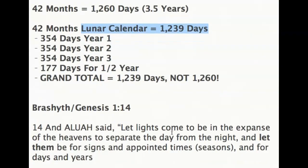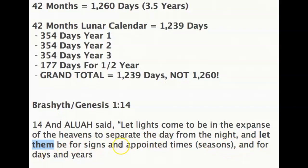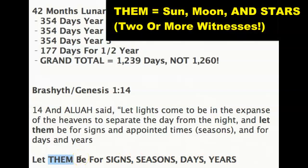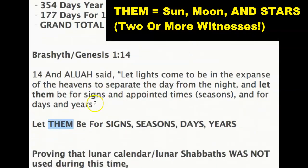We also have this witness in Genesis 1:14, where Aluah said, 'Let lights come to be in the expanse of the heavens, to separate the day from the night, and let them' — notice plural, not just the moon itself — 'be for signs, and appointed times, and for days, and for years.' The 'them' is talking about the sun, moon, and stars — your two or more witnesses — not just the moon itself. This proves that the lunar calendar and lunar Shabbats were not used during this time.